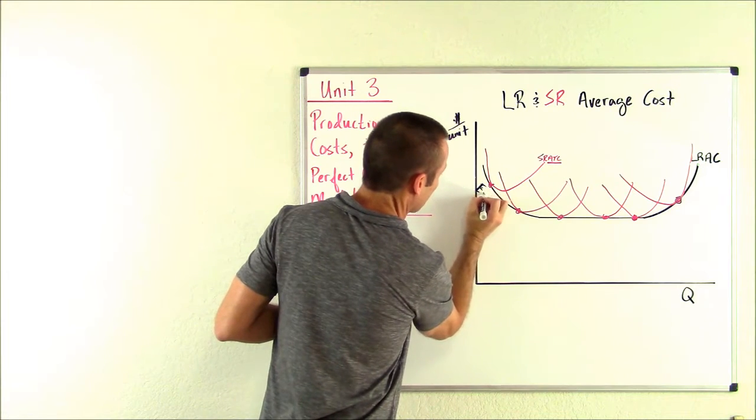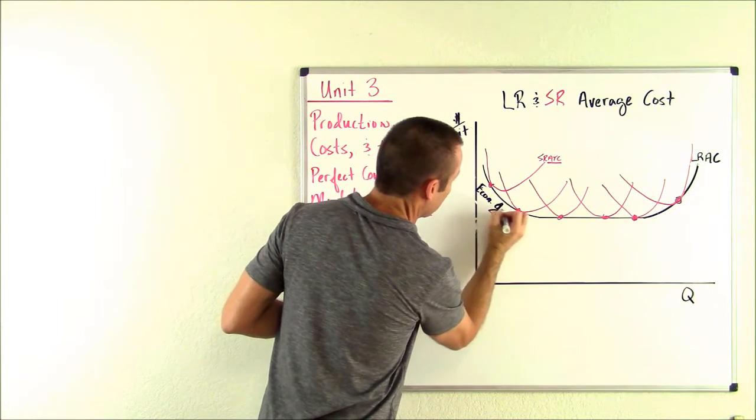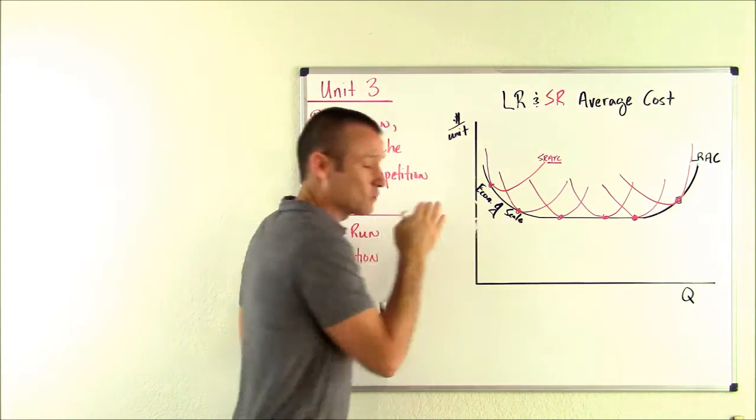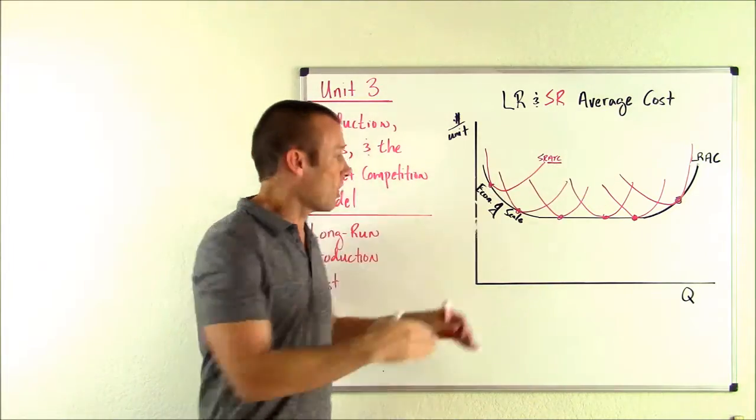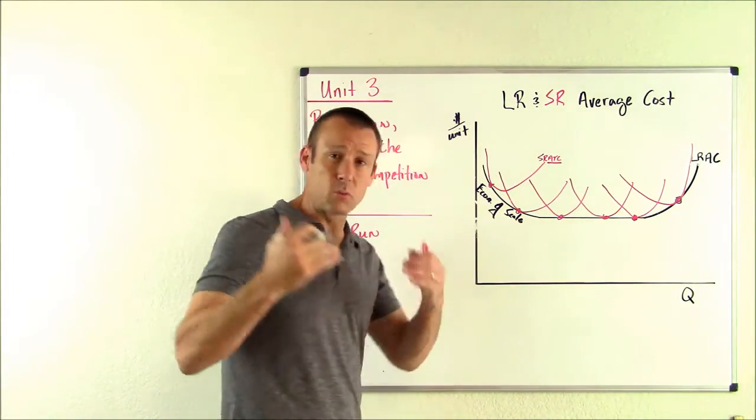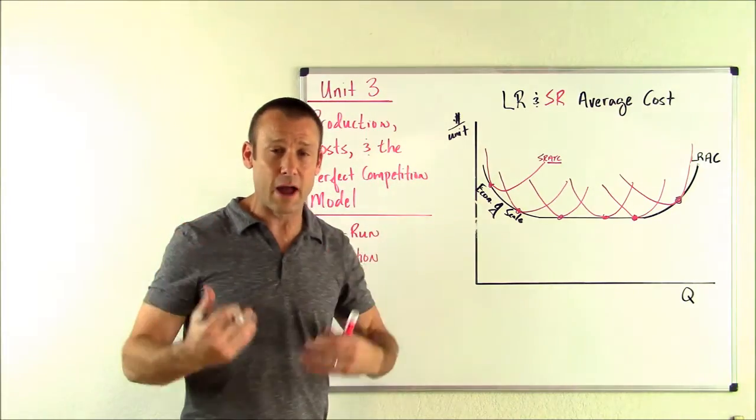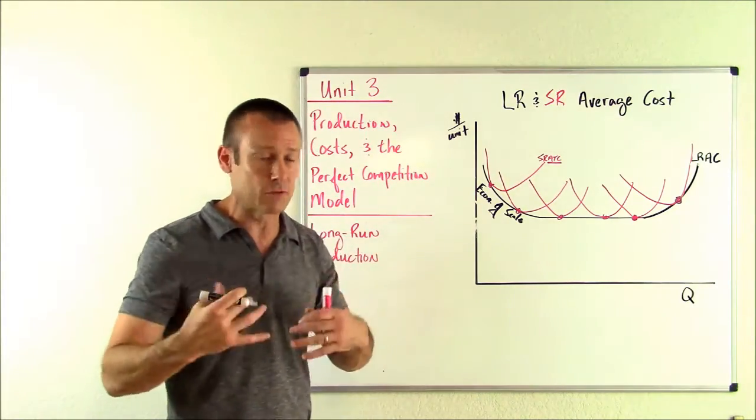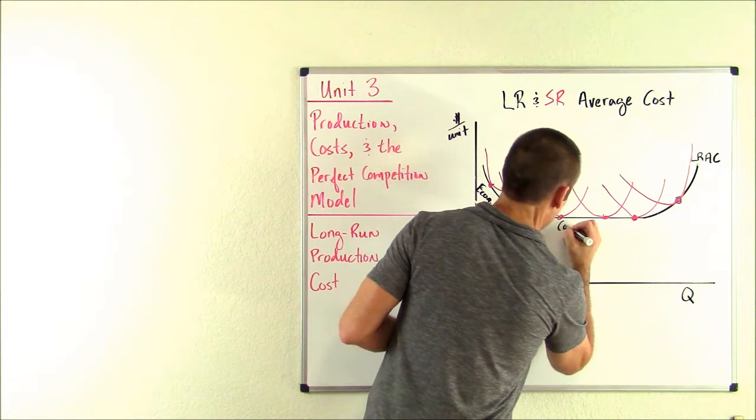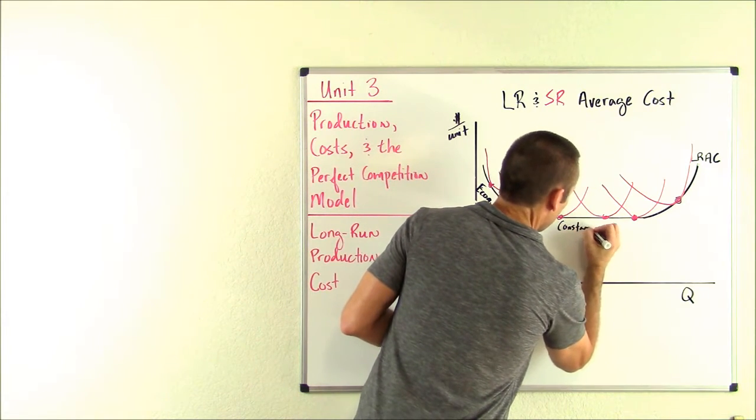Economies of size. So here's my economies of scale right there. That's when the long run average cost is going down. Now, there will be some point we can't drive down our costs no matter how big our plant is anymore, our average cost anymore. And we'll have our constant returns.